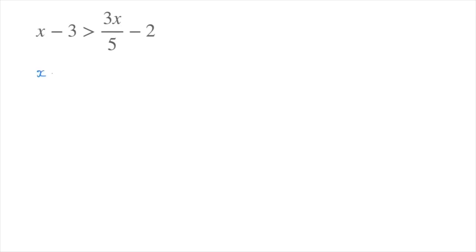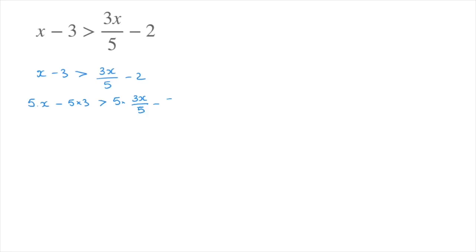What makes this inequality tricky is the fact that x is written on the numerator of a fraction. But there's a nice little trick for dealing with things like 3x over 5, and that is to multiply every single term of the inequality by 5. So that would be 5 times x minus 5 times 3, greater than 5 times 3x over 5, minus 5 times 2.